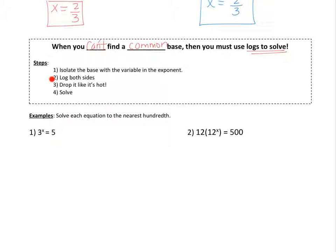And the steps are outlined here, kind of like what I just did. You want to isolate the base with the variable that's in the exponent. Isolate the base that's a three with the variable in the exponent. Log both sides. So, let's do that with example number one. Log both sides. Log of 3x equals log of 5. Drop it like it's hot is the next step.